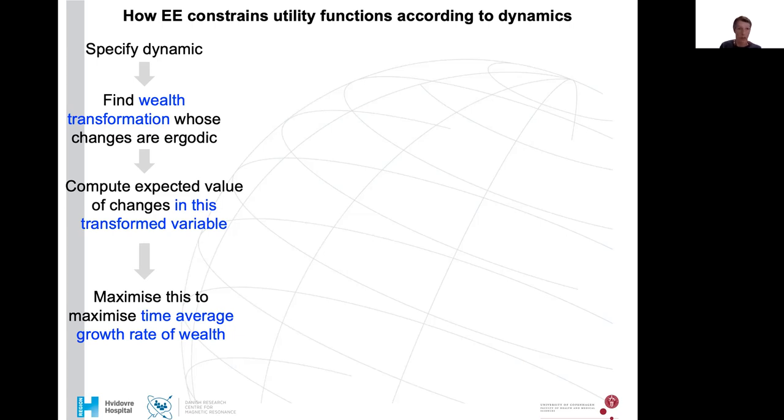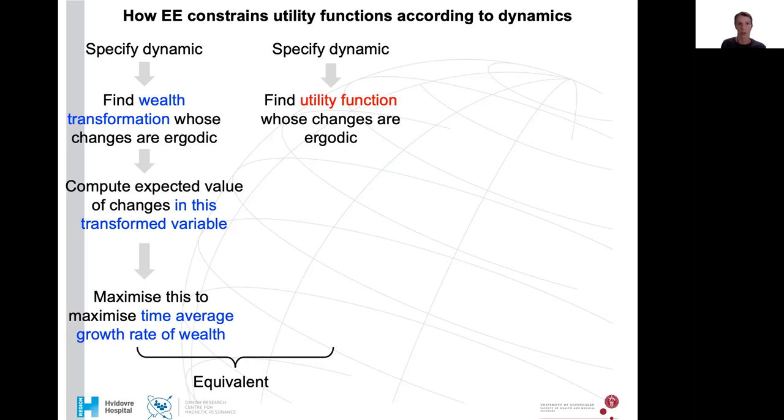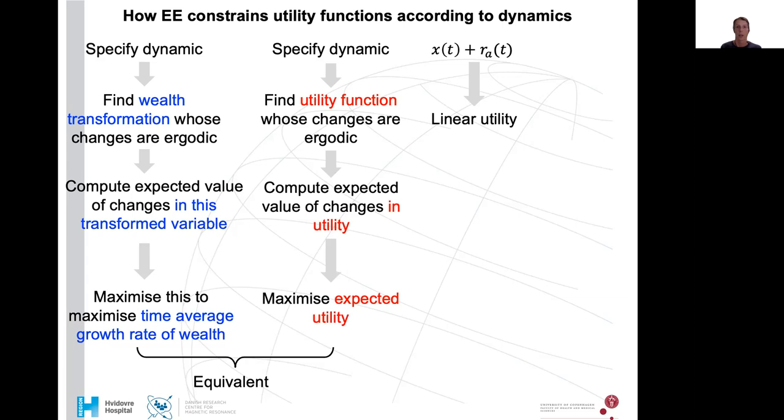You can express this decision procedure equivalently in terms of utility functions where you specify your dynamic and instead of calling it wealth transformation, you would say you find your utility function whose changes are ergodic. You compute your expected value of changes in utility and maximize your expected utility. For example, if you have some wealth X at a point T and then you experience additive growth factors, then it's an additive dynamic and you should have a linear utility function or linear wealth transformation so that you compute the expected value in just the change in wealth and maximize this.